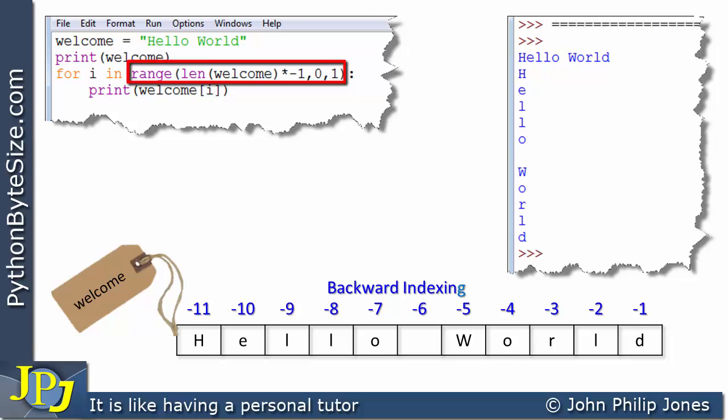We've just seen an example of the range function in use, and I've designed the program to produce the same range. This is taking the length of welcome, which is 'Hello World', so that's 11 characters. Multiplying that by minus 1 gives minus 11, so that's the start value pointing to this particular character with index minus 11. The stop value is 0 and the step is 1.